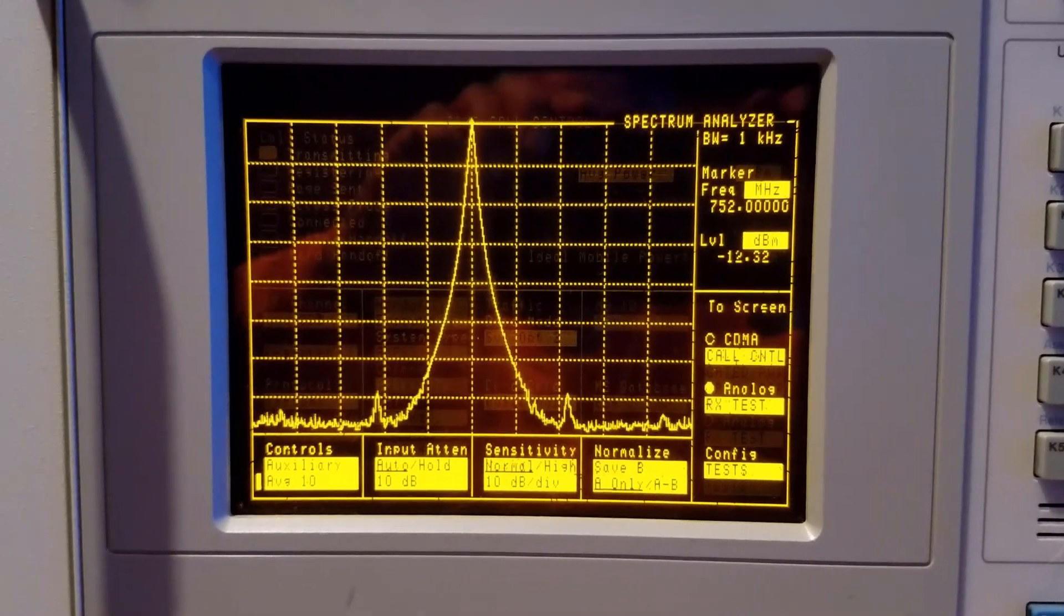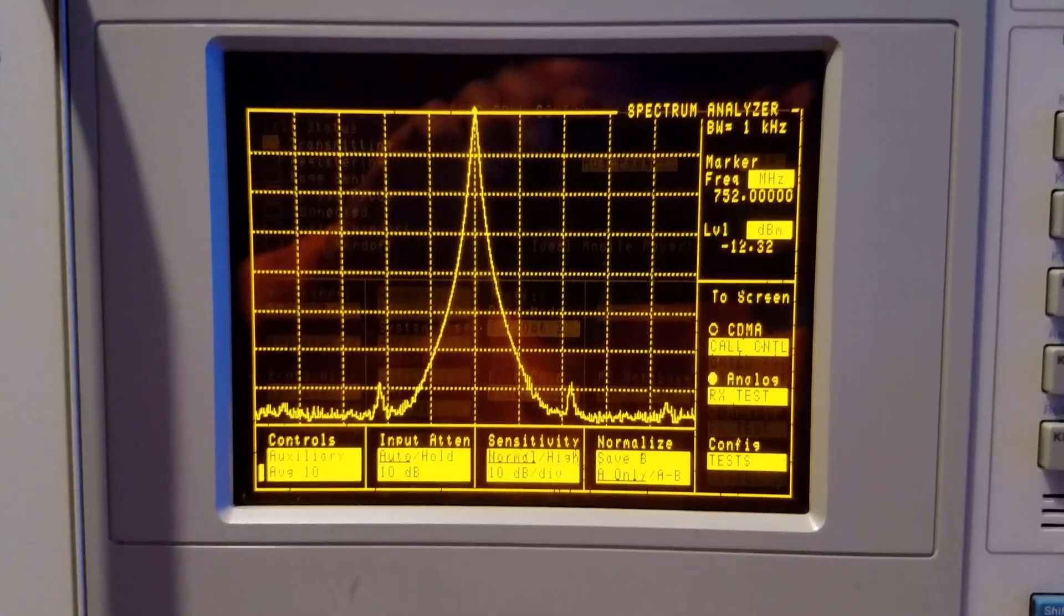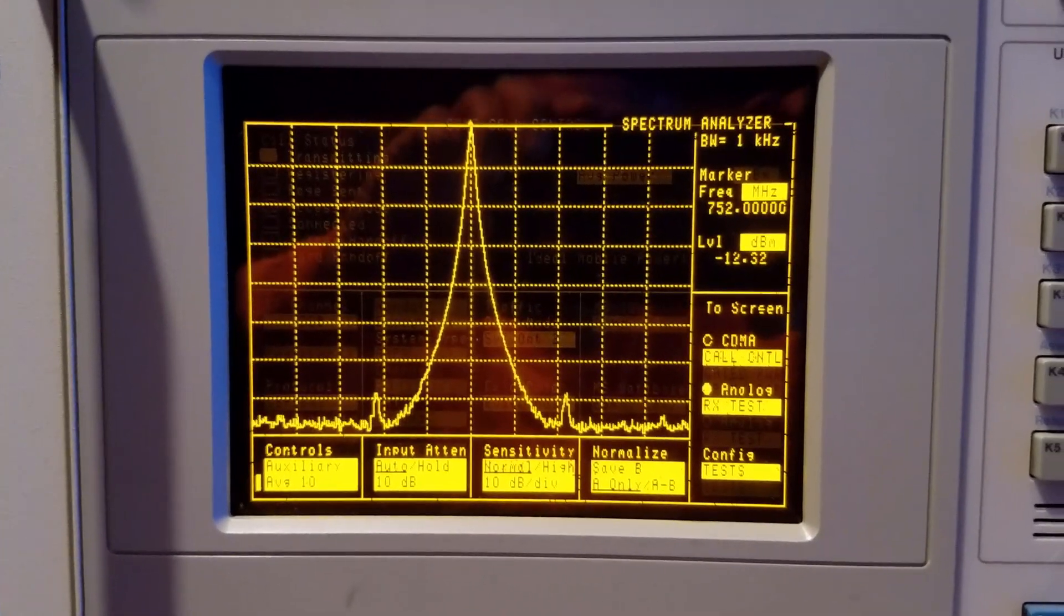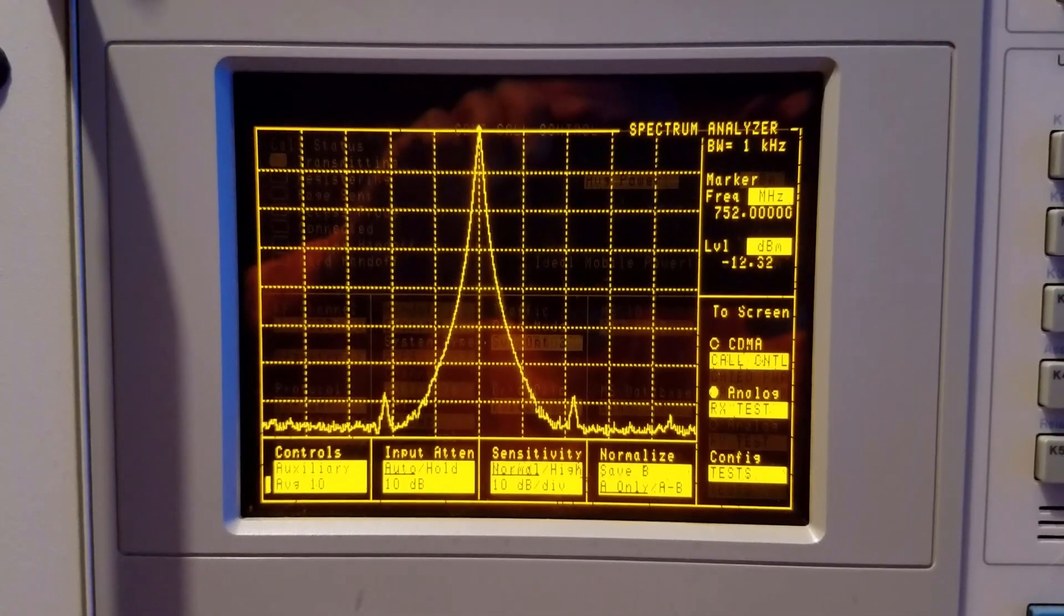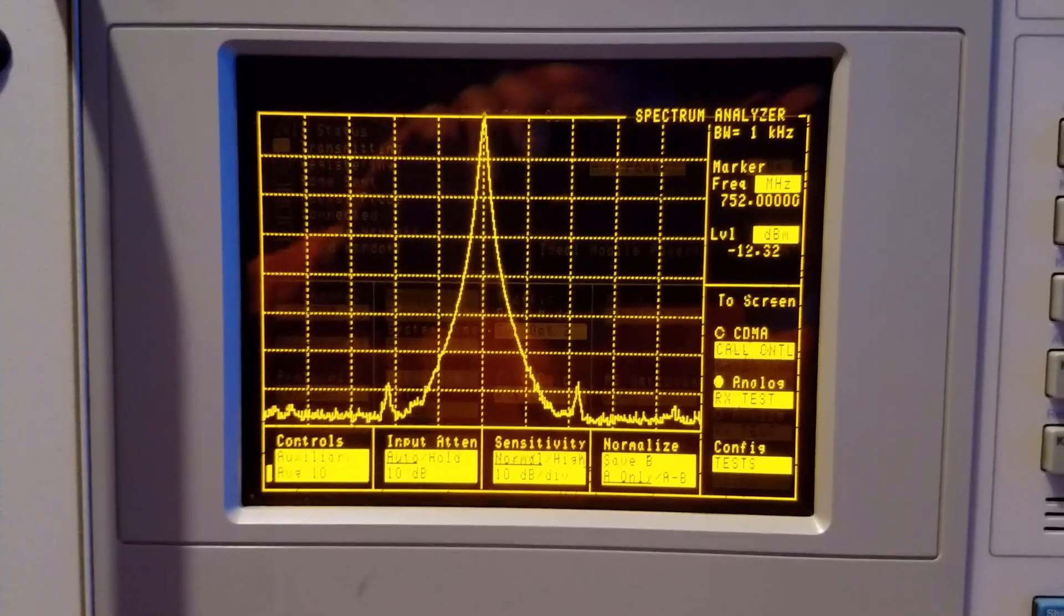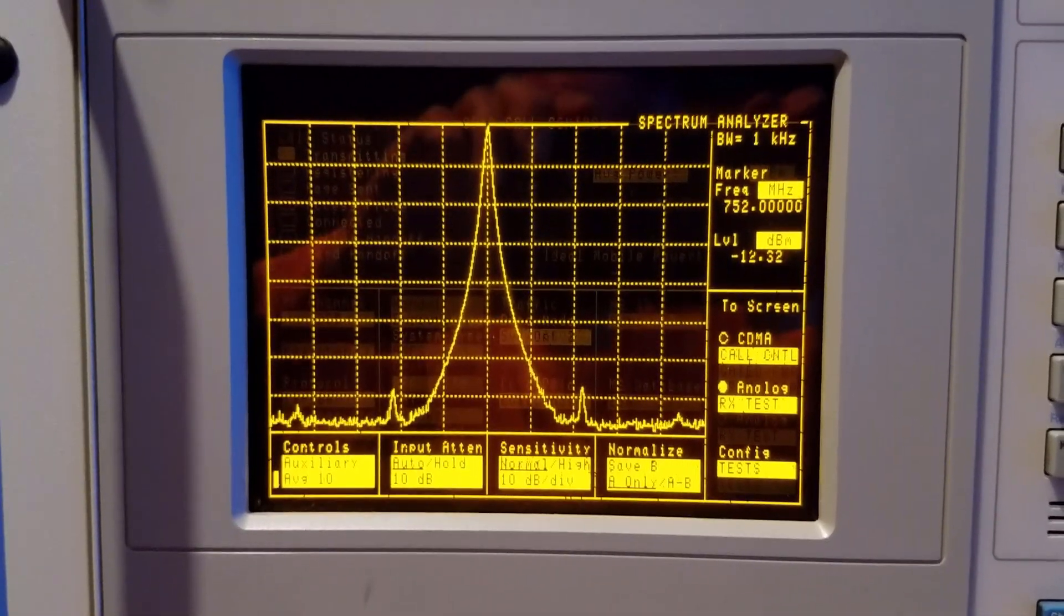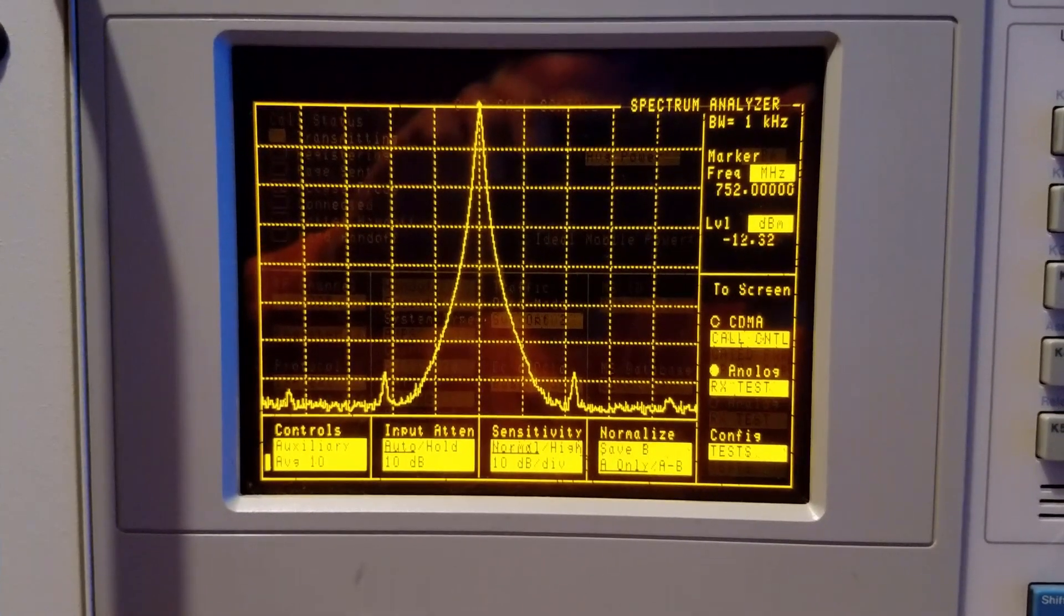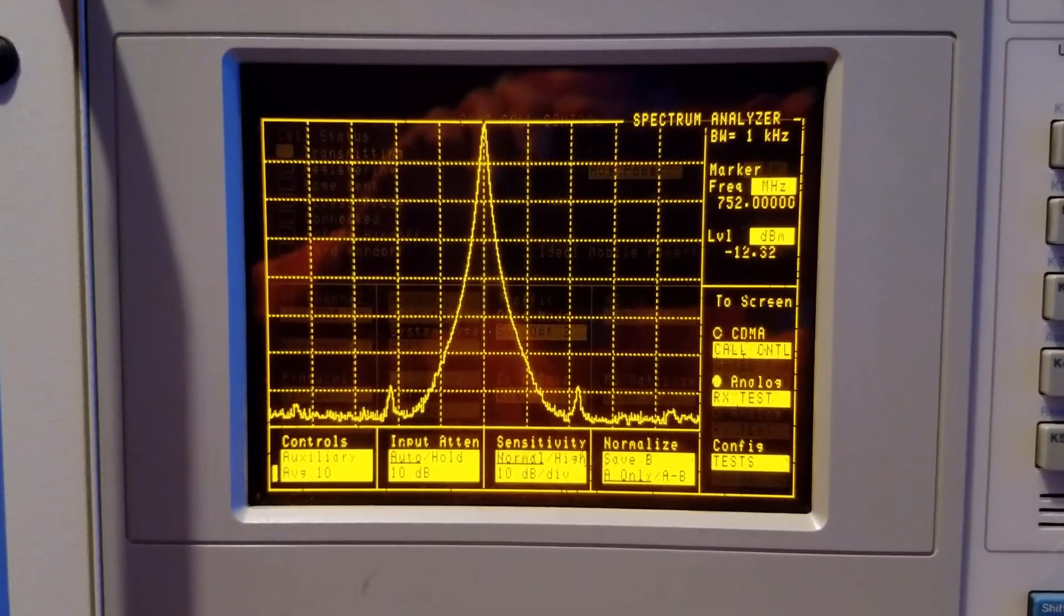This definitely looks quite a bit cleaner to me, which is one of the reasons I'm preferring this board. And again, remember that when multiplied by nine, the phase noise would probably be about 20 dB higher than it is here at 1152 megahertz.